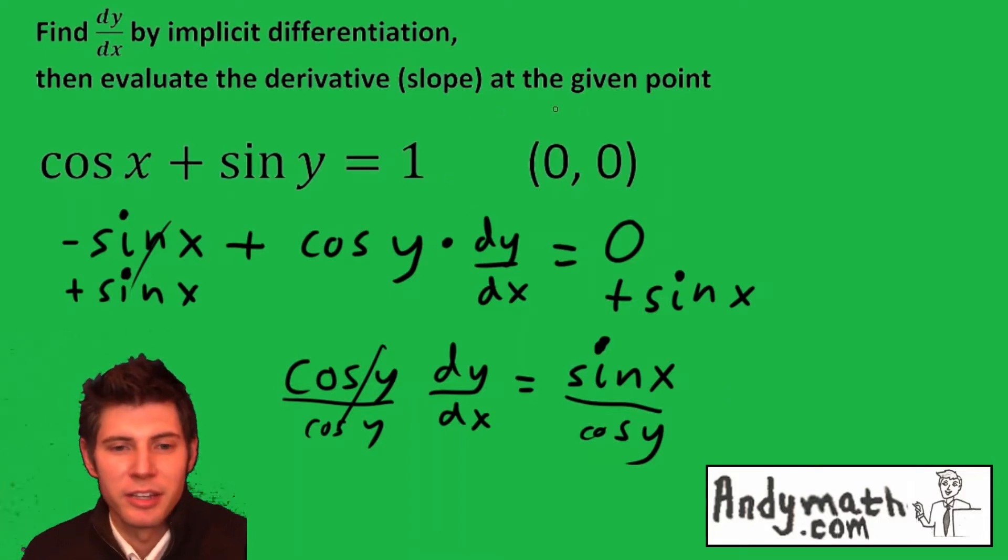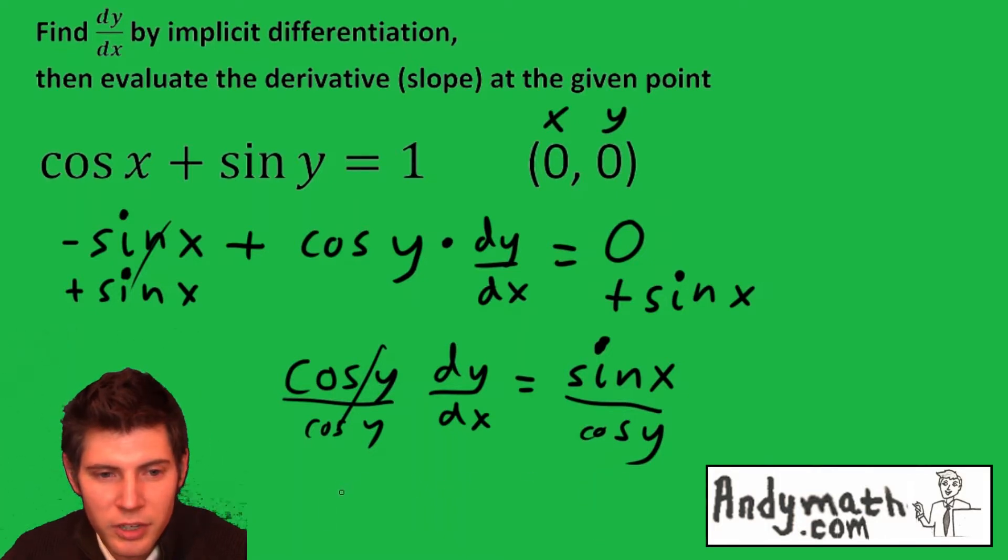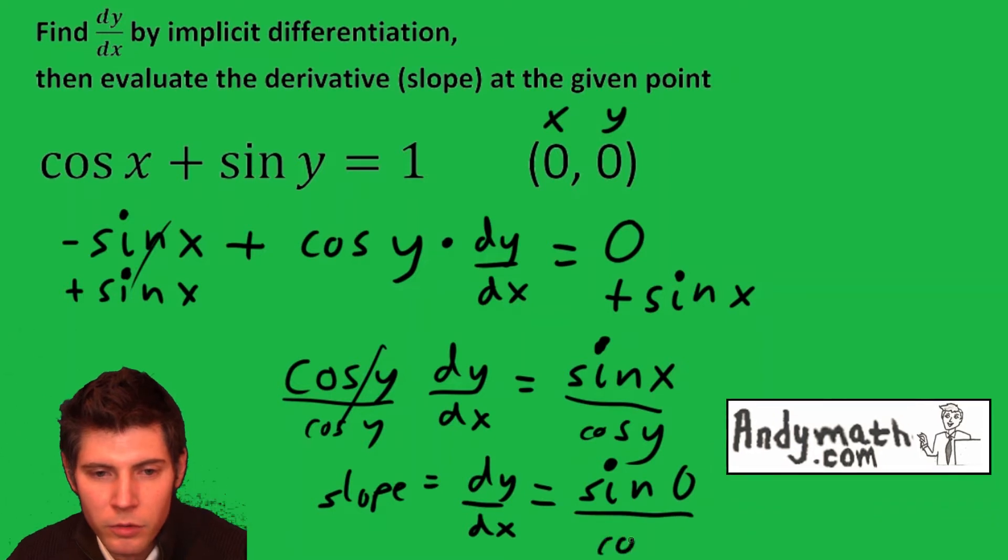Now they want us to find the derivative, the slope, at the given point. So that just means we plug in 0 for x and 0 for y into this function right here. So the slope, or dy/dx, which would be the slope at that point, is equal to sine of 0 over cosine of 0.